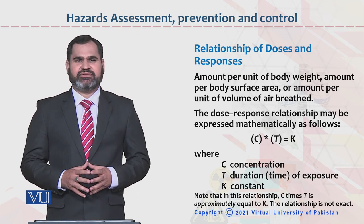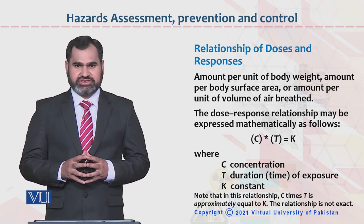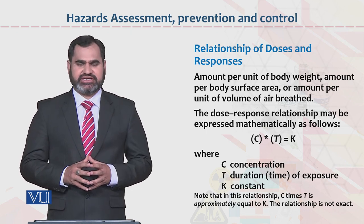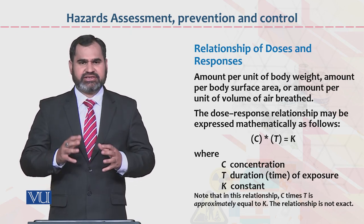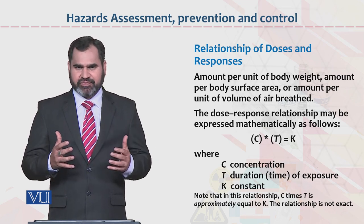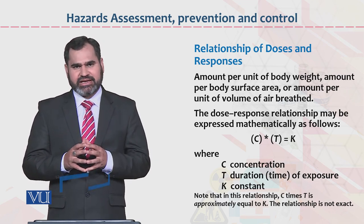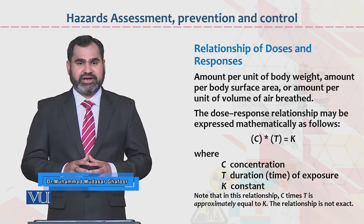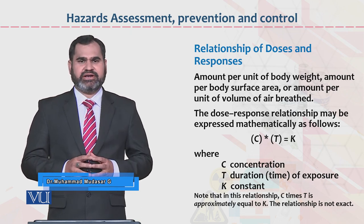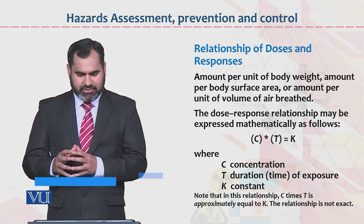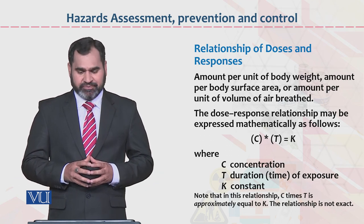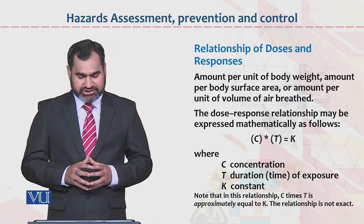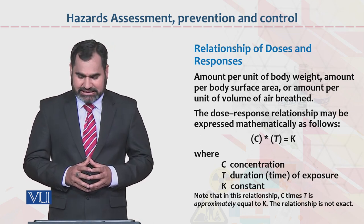In this case, we have to discuss the relationship of doses and responses. Relationship of doses and responses ka yeh matlab hai ke insaan ki jo body hai, uske weight ke hisaab se hum ne dose size recommend kerni hai, phir uska impact dekhna hai. For example: amount per unit of body weight, then amount per body surface, or amount per unit of volume of air breathed. In cheezon ko jab dekha jata hai, to hum ko idea hota hai ki that dose-response relationship may be expressed mathematically.